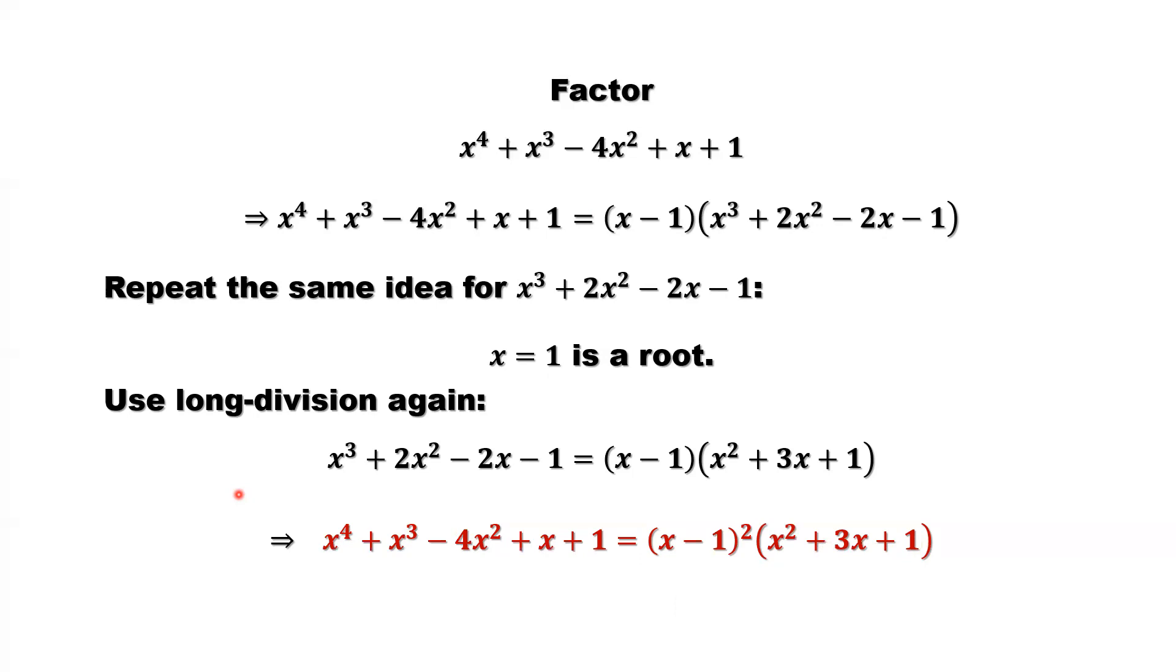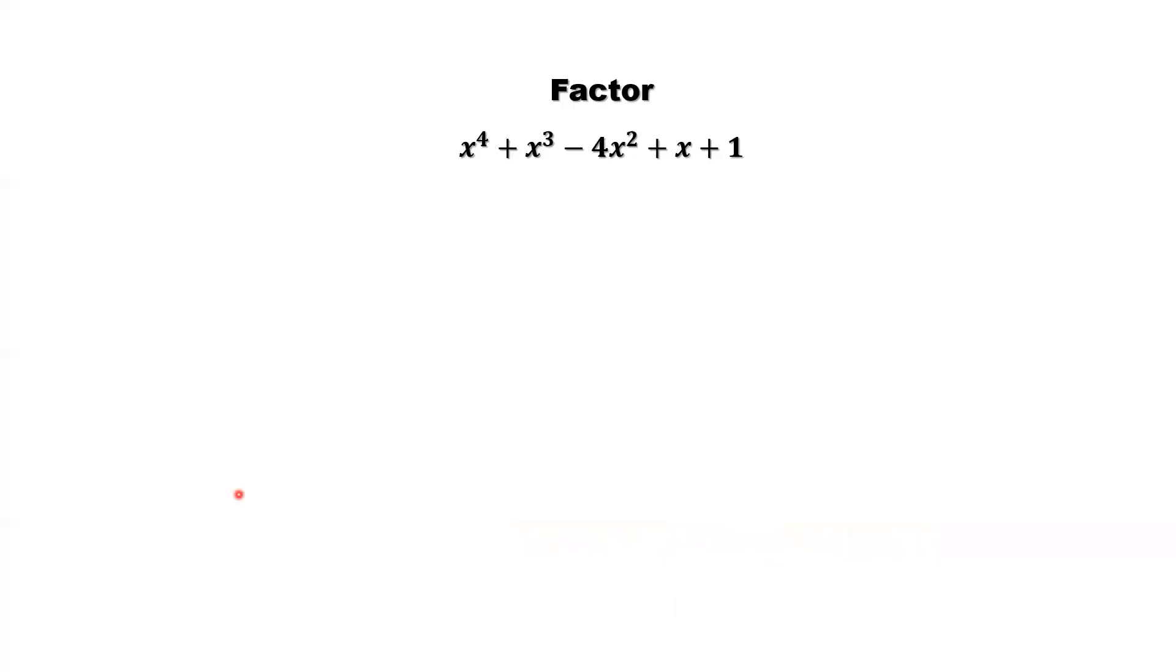Let's look at the second method. We call it the unusual method. So here that's a polynomial.